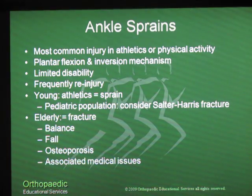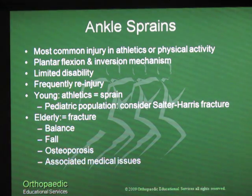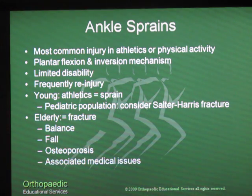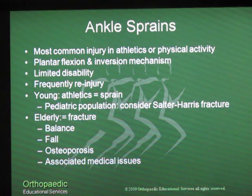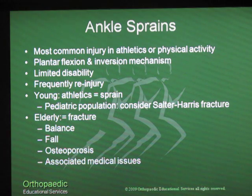Ankle sprains are one of the most common injuries that we see in athletics and in the physically active regardless of age. The typical mechanism of injury is plantar flexion and inversion. This could come about from stepping on another player's foot, stepping in a hole, on an athletic ball, on an uneven surface, on a curb, or a rock. There are a lot of things that can contribute to this mechanism of injury.